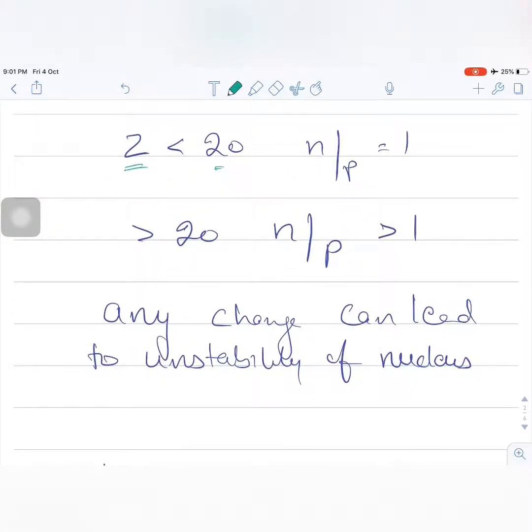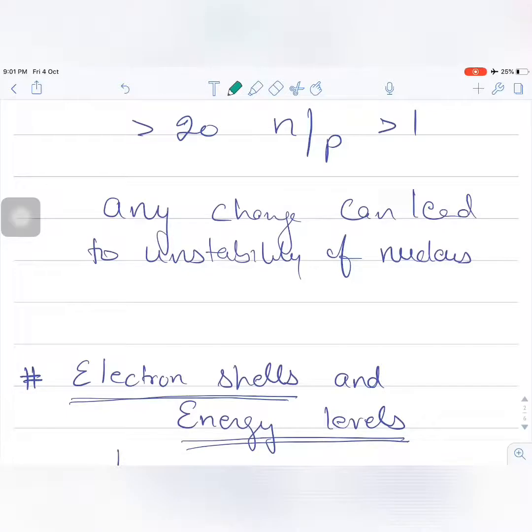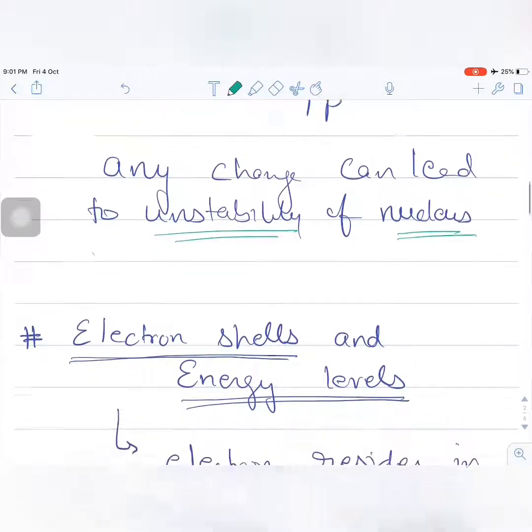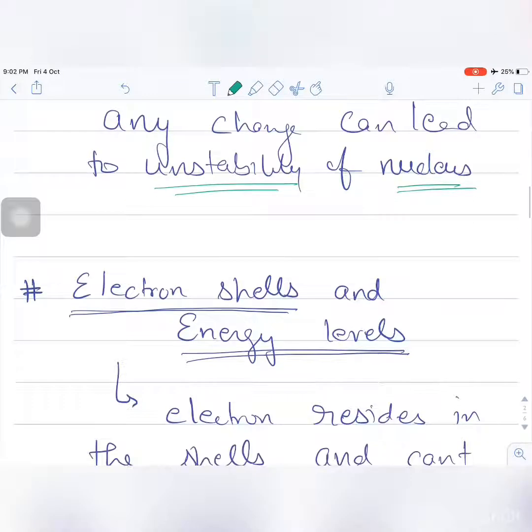If there is any change in this n/p ratio, it can lead to instability of the nucleus. If we eject more neutrons from the nucleus, it will become unstable and can lead to emission of radiation to get into a stabilized form.